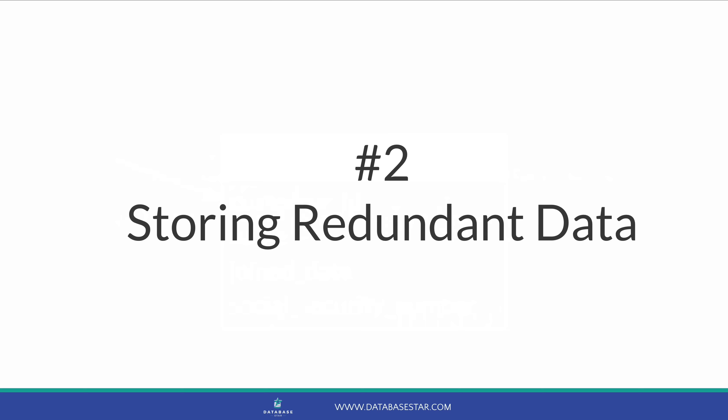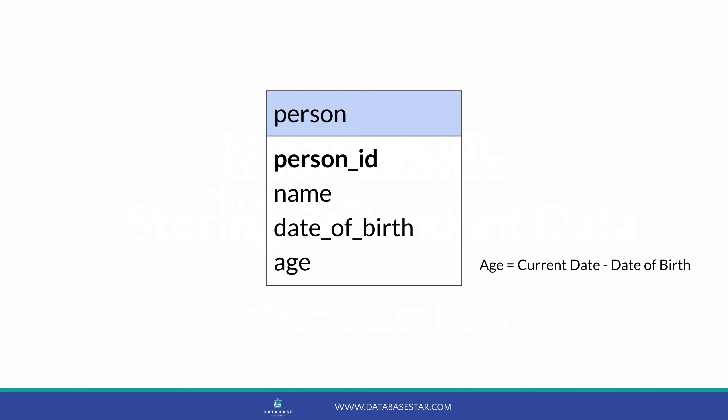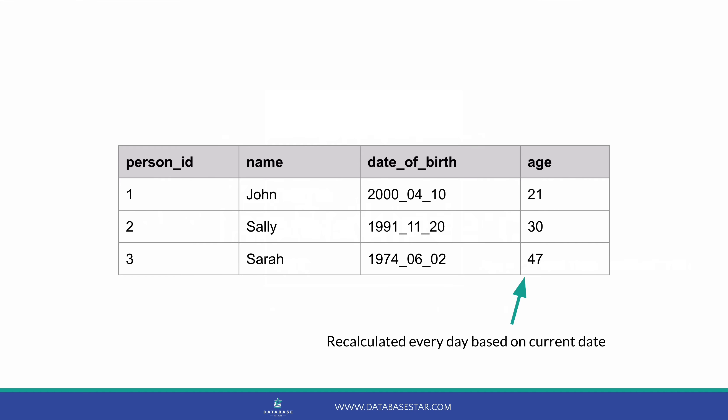The second mistake when designing a database is storing redundant data. Redundant data is any data that is unnecessary or does not need to be stored. For example, if you have a table that stores a person's date of birth and you also want to store their age, this could cause problems. The age would need to be recalculated every day based on the current date to ensure the age value is up to date.